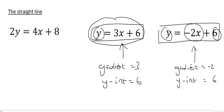However, this line's gradient is not going to be 4, because that gradient y-intercept method only works when y is alone. Now that is very important.